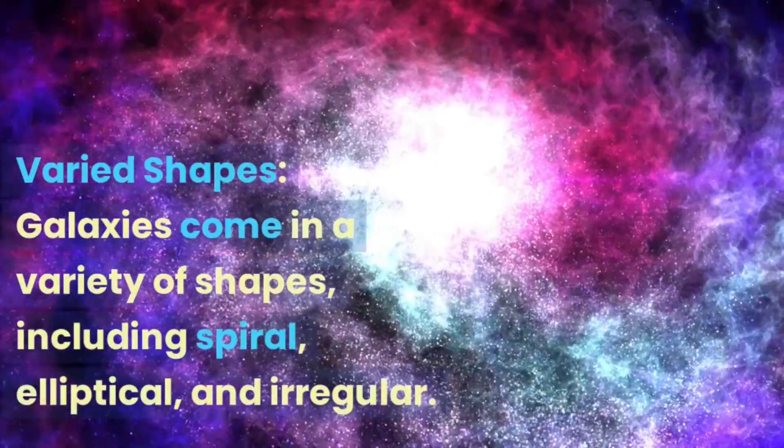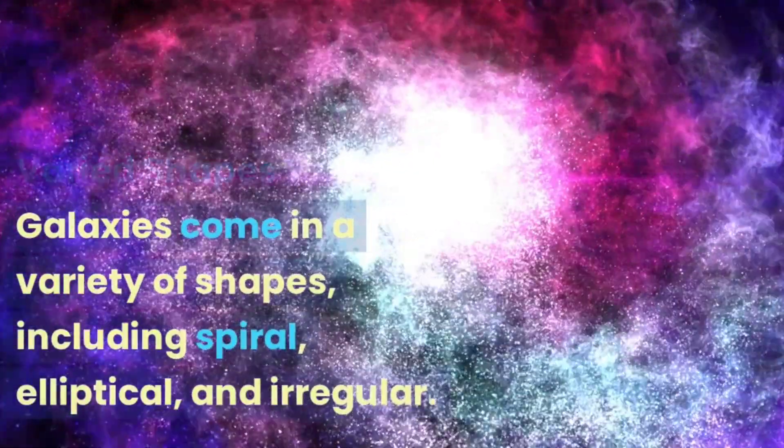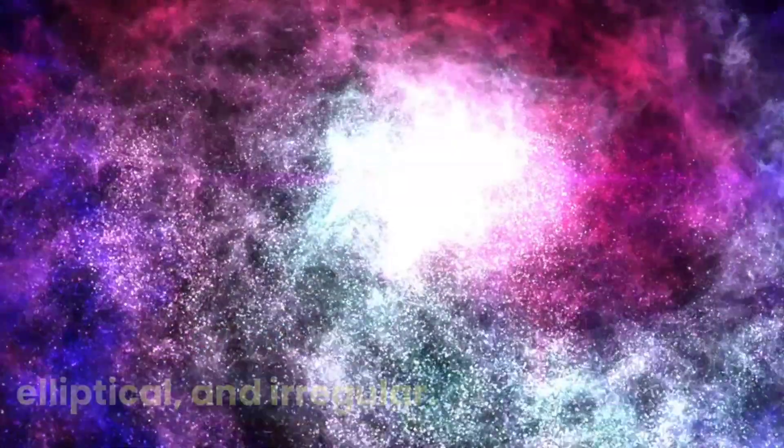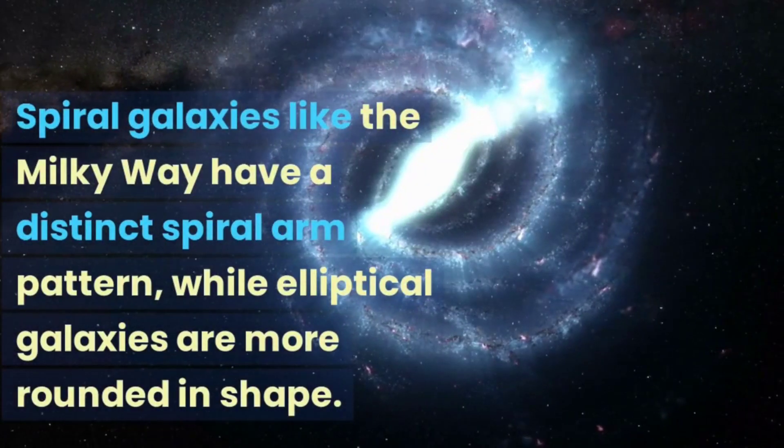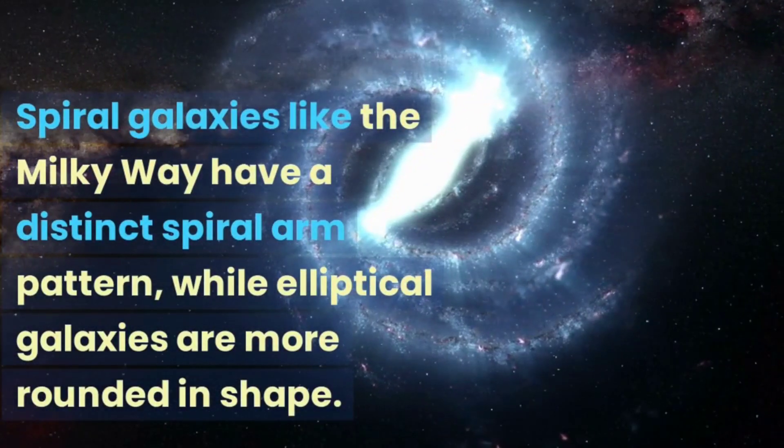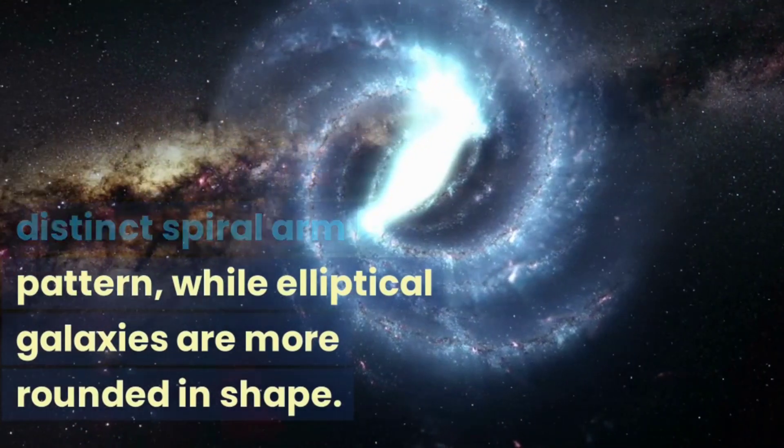Varied shapes - galaxies come in a variety of shapes, including spiral, elliptical, and irregular. Spiral galaxies like the Milky Way have a distinct spiral arm pattern, while elliptical galaxies are more rounded in shape.